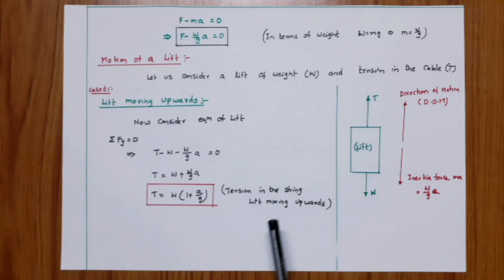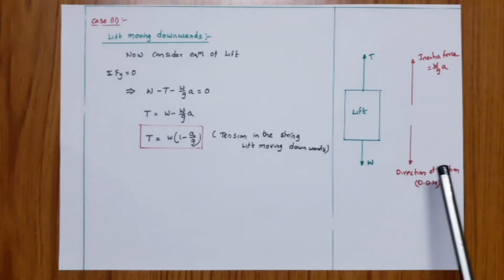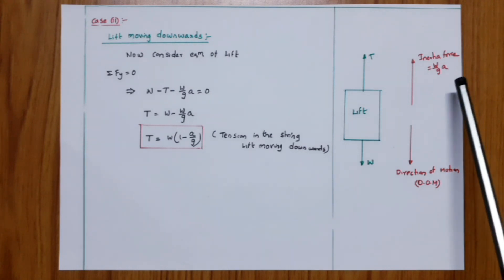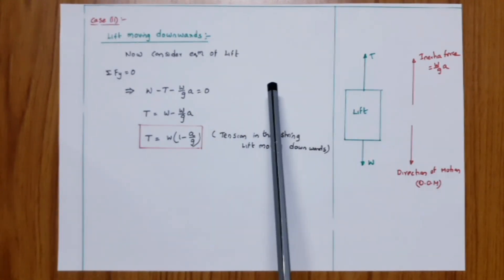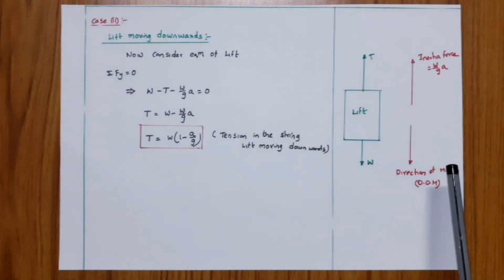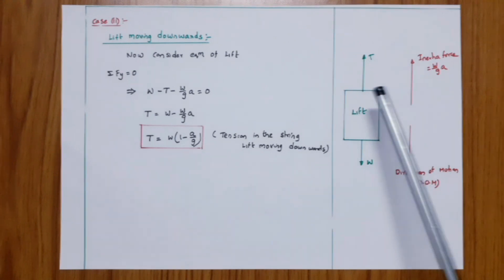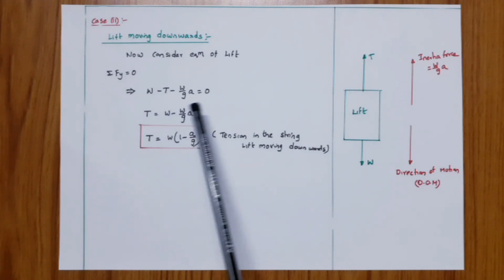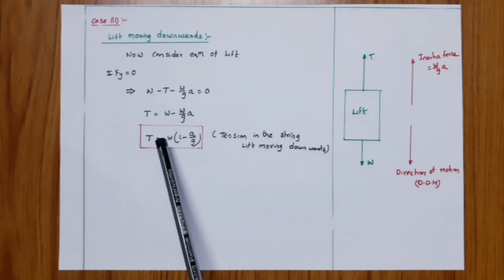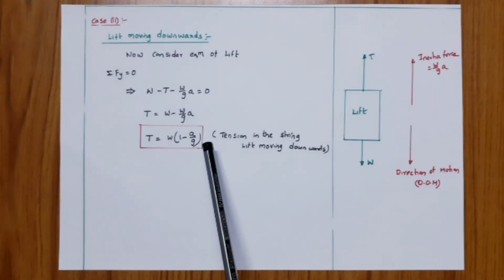Case 2: lift moving downwards. The direction of motion is downwards, so the inertia force (W/g)a acts upwards. Considering equilibrium of the lift, sigma Fy equals zero. W is positive (in the direction of motion); T and (W/g)a are opposite to the direction of motion. So: W minus T minus (W/g)a equals zero. Therefore, T equals W minus (W/g)a, giving tension in the cable T equals W times (1 minus a/g).